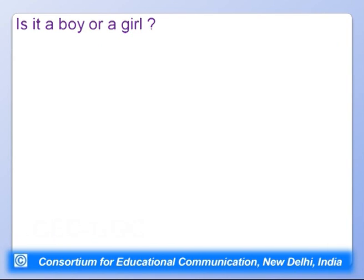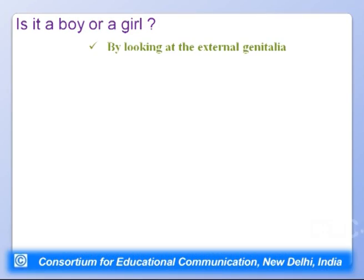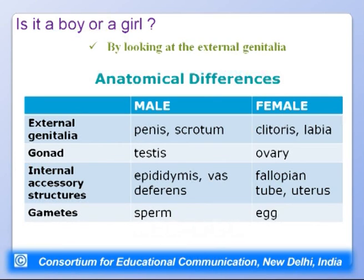When a woman gets pregnant, the first question parents ask is: will it be a boy or a girl? This is not disclosed until birth, when external genitalia reveal the sex. There are anatomical differences between males and females: external genitalia (penis and scrotum in males; clitoris and labia in females), gonads (testes vs. ovaries), and internal accessory structures (epididymis and vas deferens vs. fallopian tube and uterus).